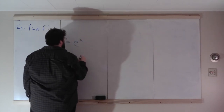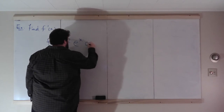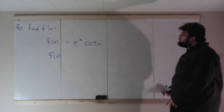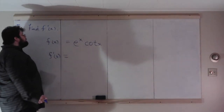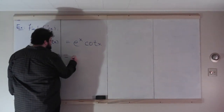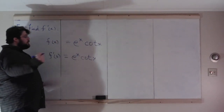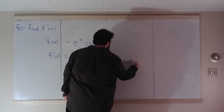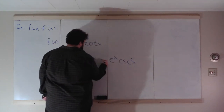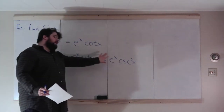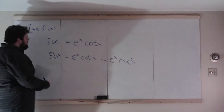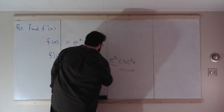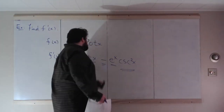Let's do f(x) equals e to the x times cotangent x. We have a product, so use the product rule. Derivative of e to the x is itself. So: e to the x times cotangent x, plus e to the x times the derivative of cotangent x. Derivative of cotangent is negative cosecant squared. You could factor out an e to the x if you want, but you can leave the answer as e to the x cotangent x minus e to the x cosecant squared x.